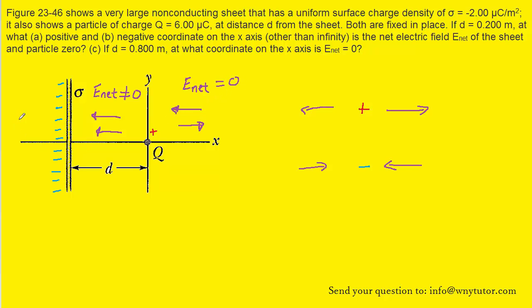The same story applies on the left side of the sheet. We have the sheet producing an electric field pointing towards it, and the positive particle producing an electric field pointing away from it. Those could cancel each other out, and so we could get a net electric field equal to zero there as well.